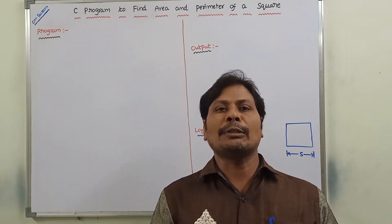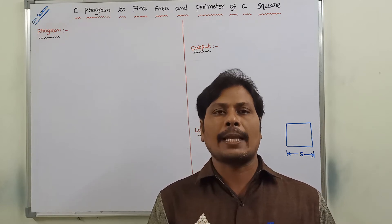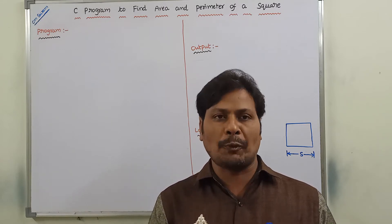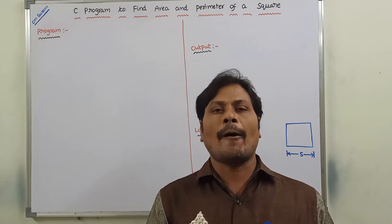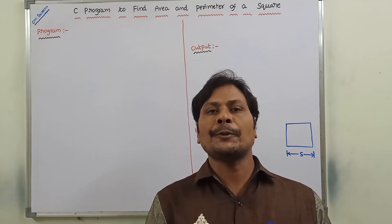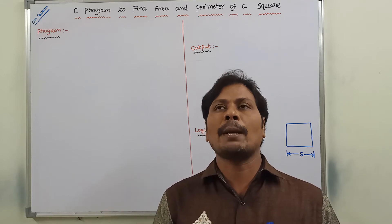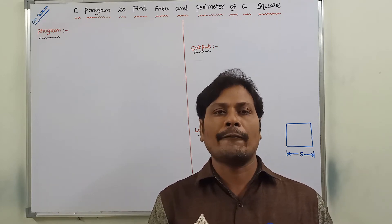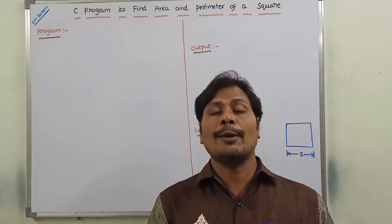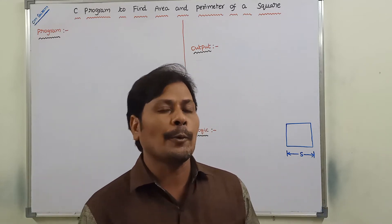Hi friends, welcome to our YouTube channel. Today we have to discuss about a C program to find the area and perimeter of a square. In the previous videos we have already solved two important programs: first, a C program to find area and perimeter of a rectangle, and second, a C program to find area and perimeter of a circle. If anybody wants, please refer to those videos on my YouTube channel, Divvela Srinivasrao.